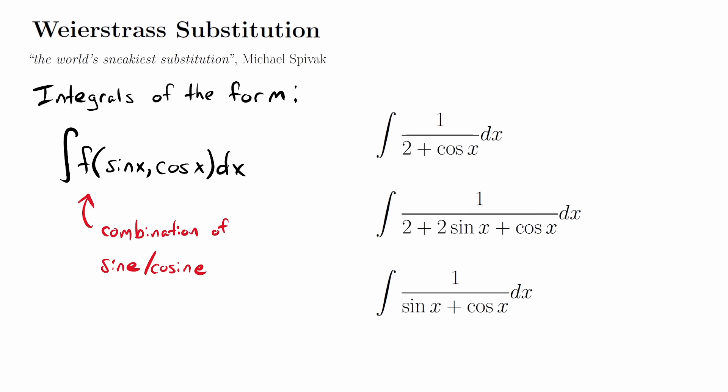Using that last example as guidance, we're going to make a substitution of the following form: t equals tangent of x over 2. As it turns out, that's going to take these integrals and convert them into an integral where we can typically apply partial fraction decomposition. Now with that out of the way, let's go ahead and take a look at the basics — some review topics involving simple trigonometric identities that you're already familiar with.